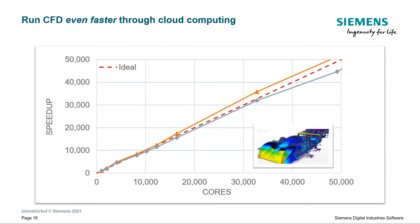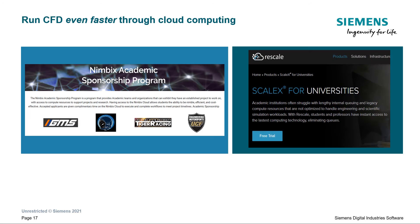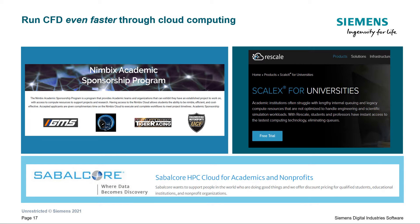Better computers help run these simulations faster, since processing ability is determined by the number and speed of CPUs and is limited by memory access speed. However, your team may not have access to high-end computers or clusters on campus. Cloud computing companies like Nimbix, Rescale, and Sablecore can alleviate this problem by providing these resources at no cost.